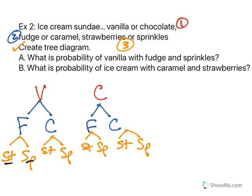We can see we have one, two, three, four, five, six, seven, eight. So the total number of options is eight.